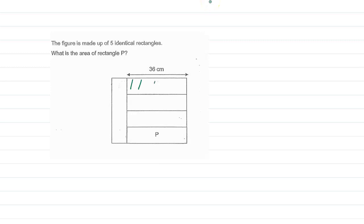Four of them have been kept horizontally and one of them has been kept vertically, so we get a shape. We have to figure out the area of rectangle P.